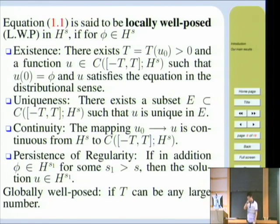So now, local well-posedness. The KdV equation is said to be locally well-posed in H^s if, for given initial data φ belonging to H^s, first one is existence. There exists a solution in some weak sense, with the initial data at t equals 0.